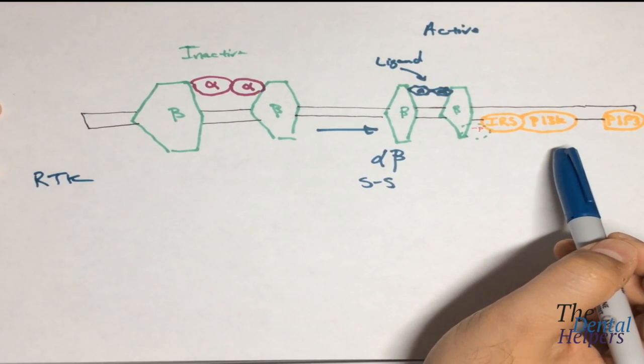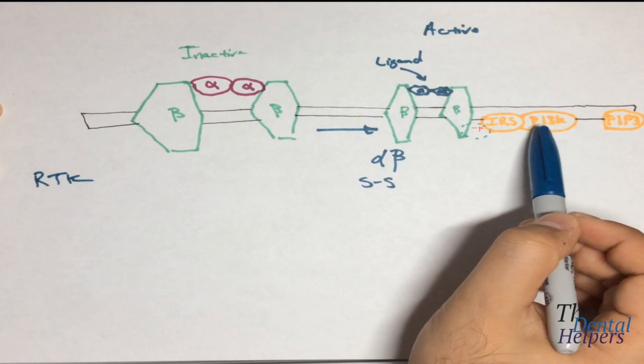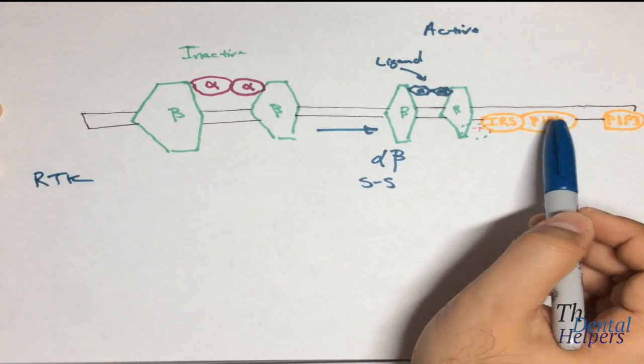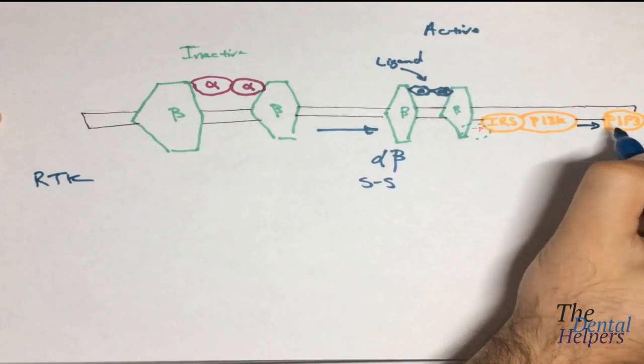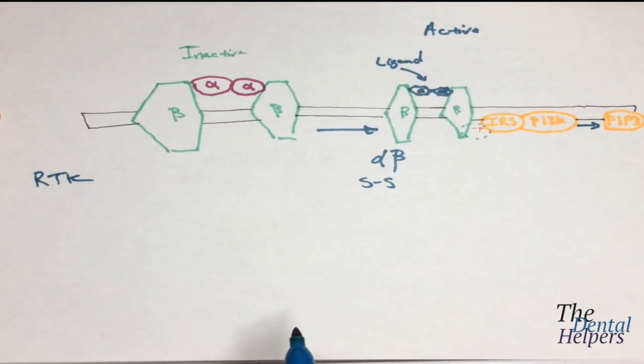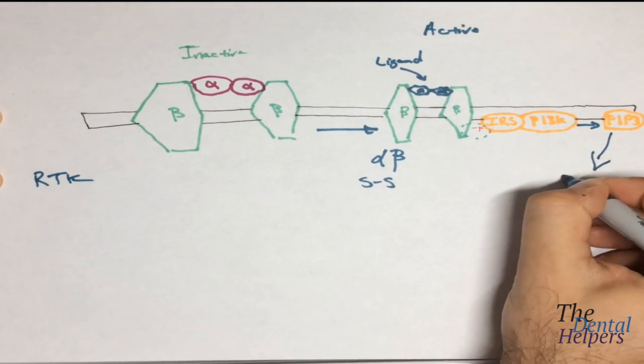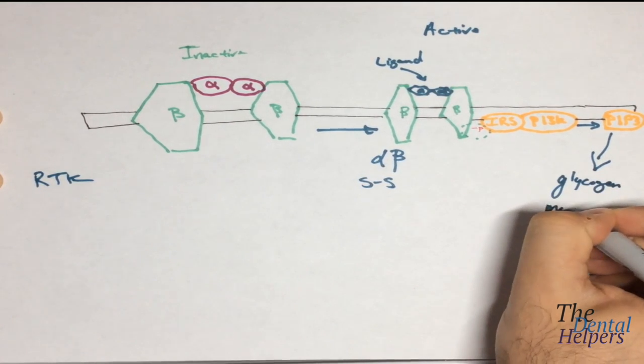Which will then cause PI3K to dock on to IRS, which this then forms PIP3. And PIP3 is activated for PI3K signaling, which is ultimately going to control glycogen metabolism.